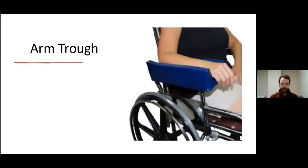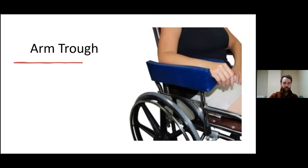An arm trough is an example of support that slides over the armrest of a wheelchair. Pros: the arm is supported and maintained in a nice neutral position, preventing contractures. Drawbacks: the arm may be stuck in one position for a prolonged period, wheelchairs are not always a perfect fit — they could be too high, too low, or too far to the side — and it doesn't always allow good functional use of that arm.